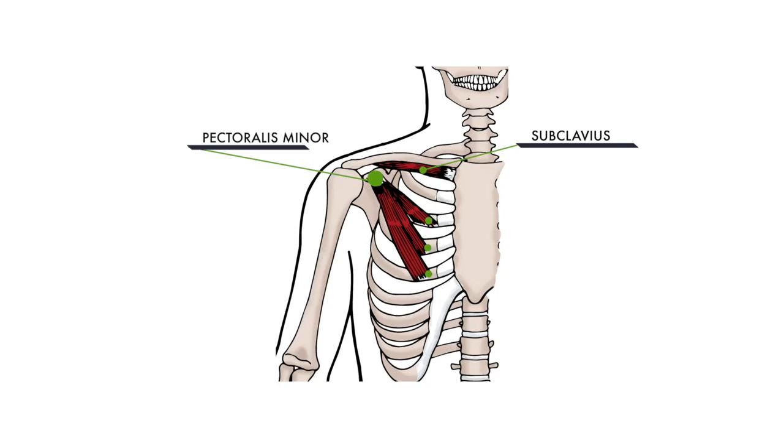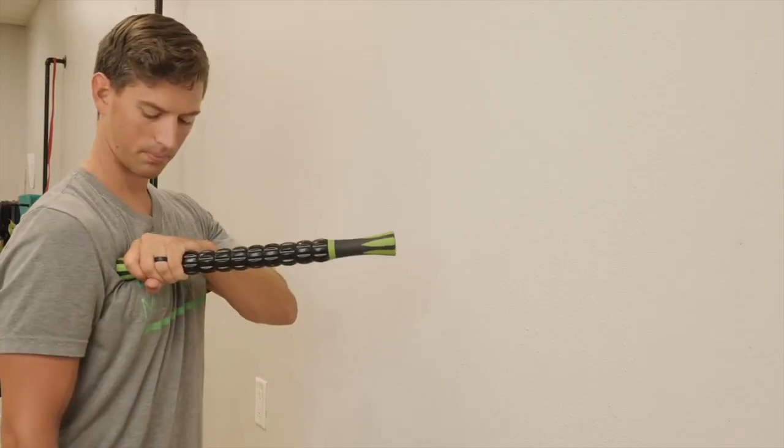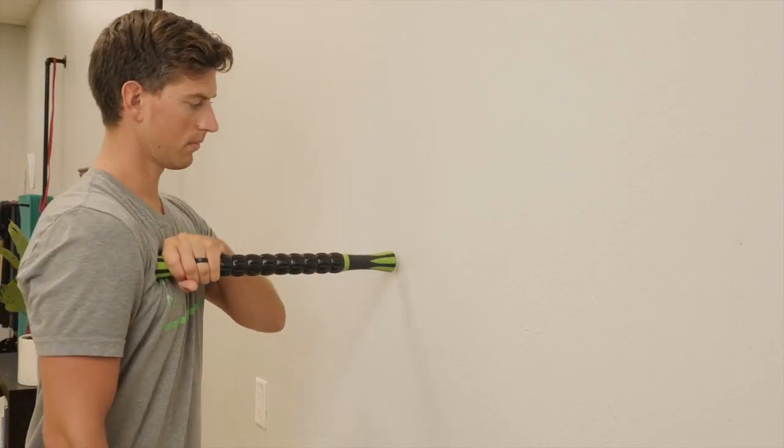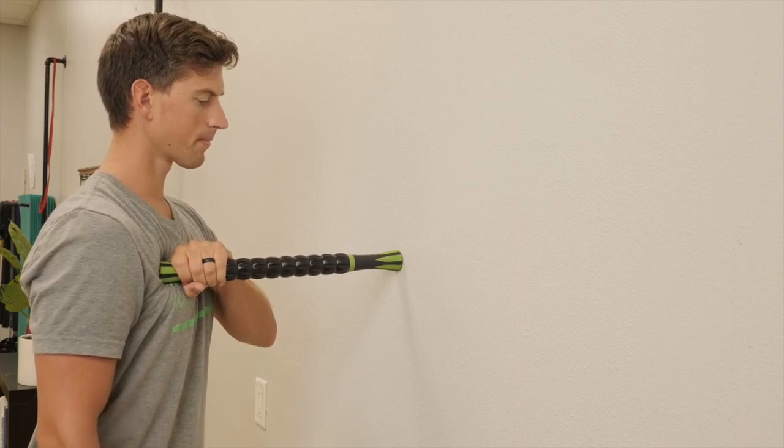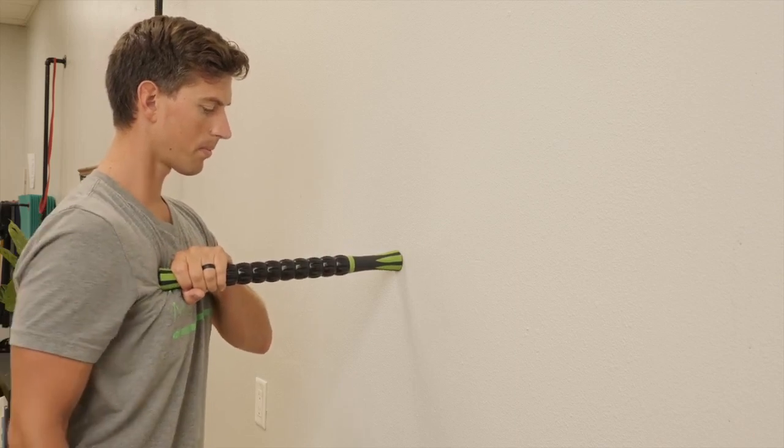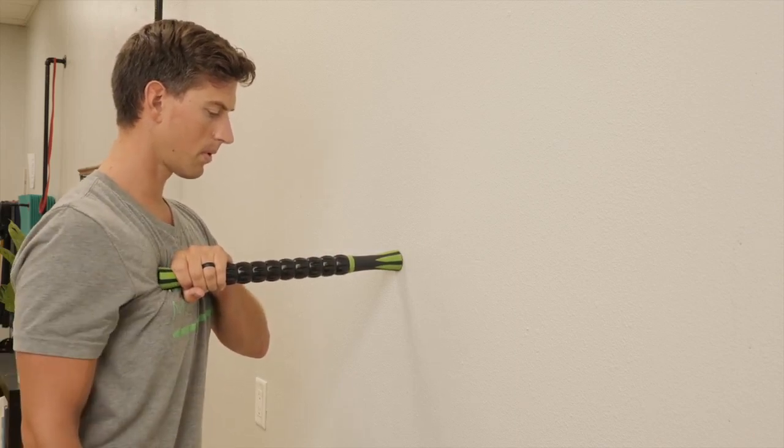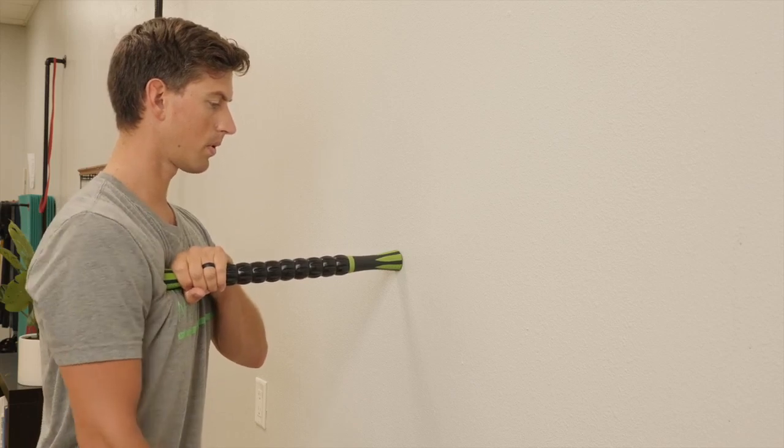We're going to work with the massage stick against the wall, pressing the end of the massage stick directly into the belly of the pec minor muscle. The focus here is to work through the pec major and pull your shoulders backwards, stretching the pec minor.